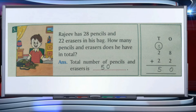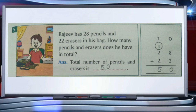We will write tens and ones, then we add 28 plus 22. We start the addition from the ones place: 8 plus 2 is equal to 10, so 0 comes on the ones place and 1 goes as carry on the tens place. Now we add the tens place: 2 plus 2 is 4, and 1 carry makes 5. So the answer is 50 — the total number of pencils and erasers is 50.